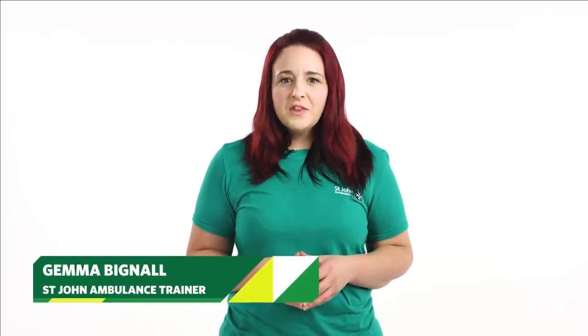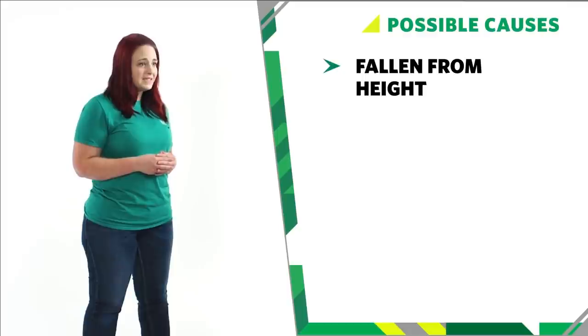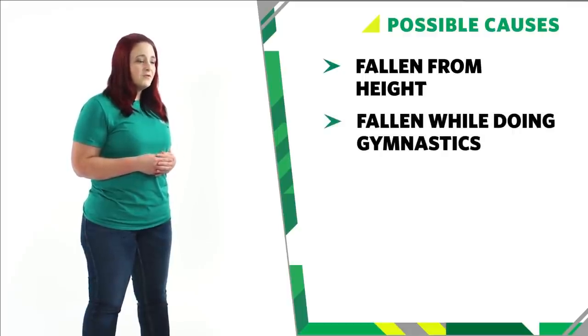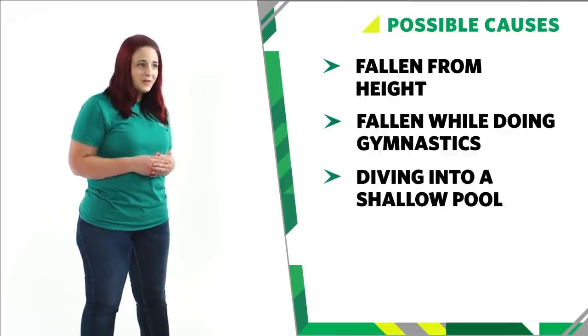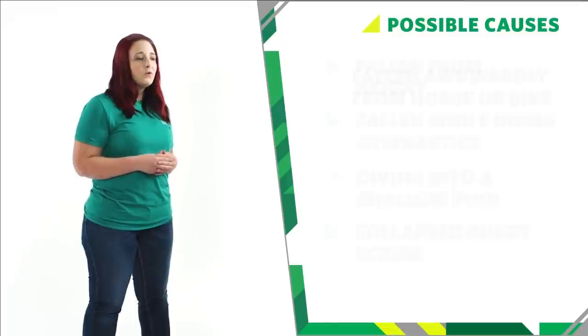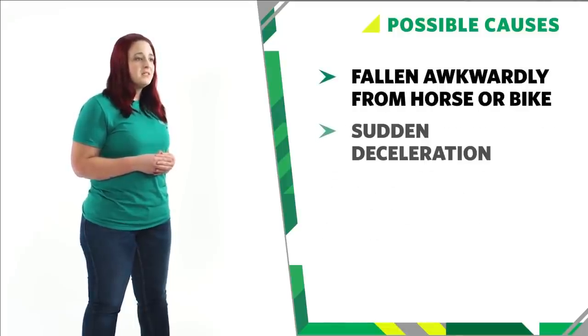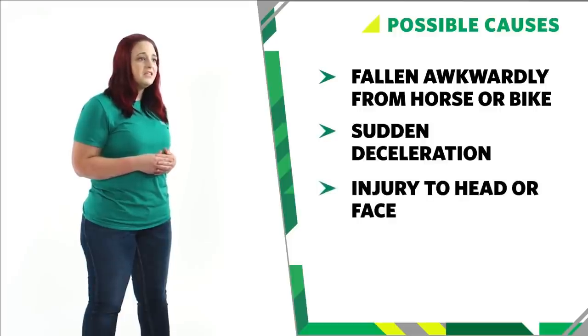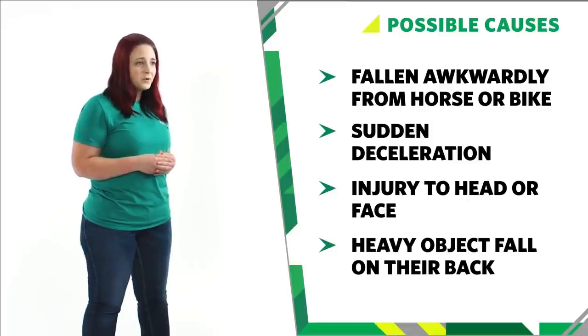When someone has a spinal injury, the greatest risk is that their spinal cord may be temporarily or permanently damaged. If a casualty has suffered an abnormal force to the neck or back and is complaining of changes in sensation or difficulty in moving, they could have a spinal injury. You must take care not to unnecessarily move their head, neck or spine. Some incidents that could indicate a possible spinal injury include: falling from a height such as from a ladder, falling awkwardly when doing gymnastics, diving into a shallow pool and hitting the bottom, a collapsed rugby scrum, falling awkwardly from a horse or motorbike, sudden deceleration in a car, an injury to the head or face, or a heavy object falling across their back.